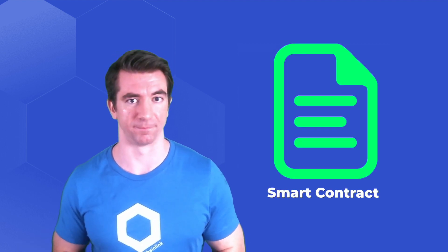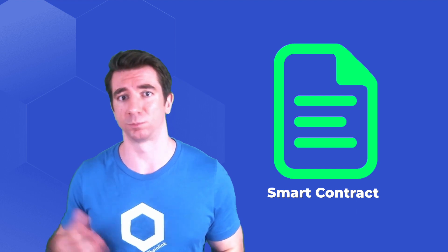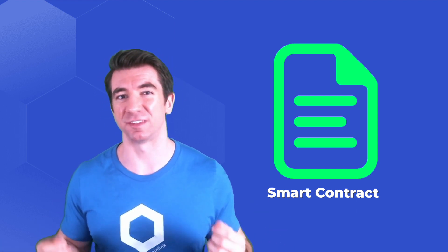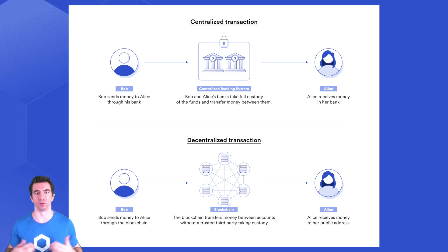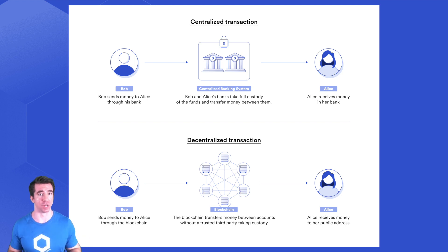We use regular contracts every day, from our job salaries to our school loans to insurance, but they each have a centralized entity that needs to manually execute the deliverables on those contracts. Smart contracts, however, automatically execute whenever the parameters are met and do not need to rely on a centralized figure or entity to execute them.